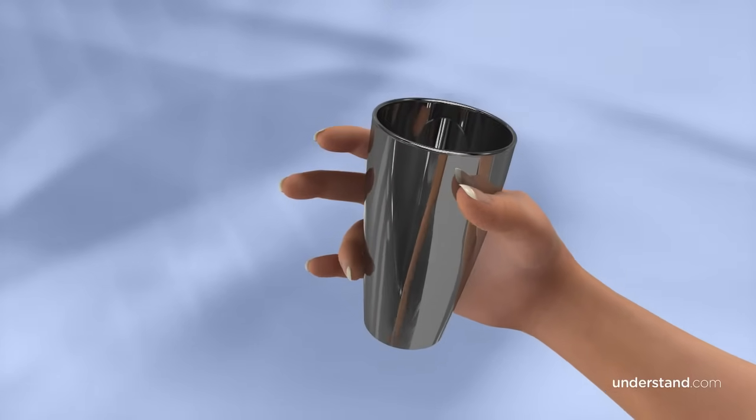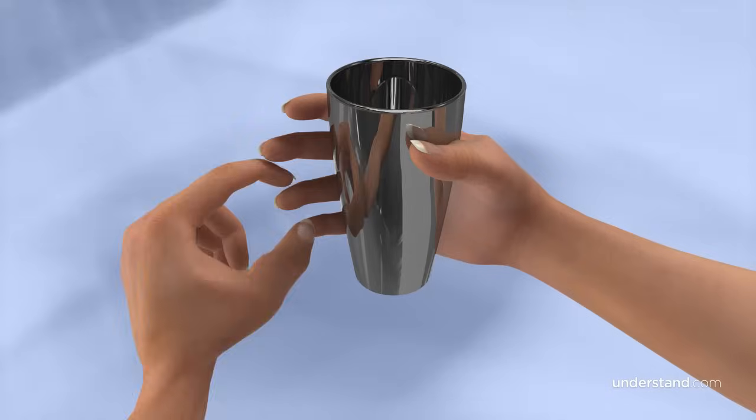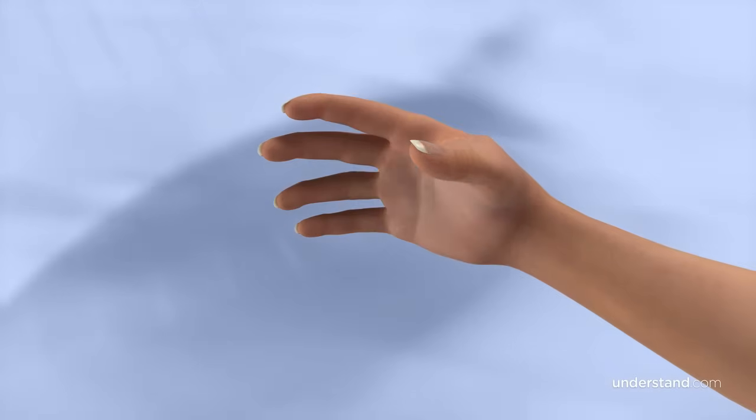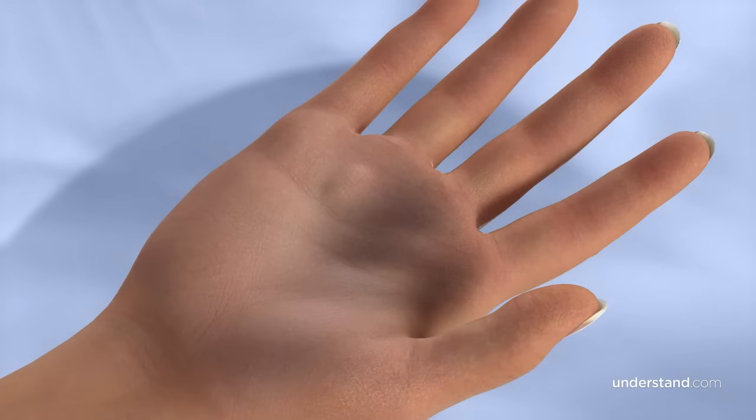The tendon may become stuck and won't move through the pulley without effort to free it. Tenderness and swelling are often present in the palm in line with the affected finger. In addition to catching and pain, a palpable nodule is often observed.